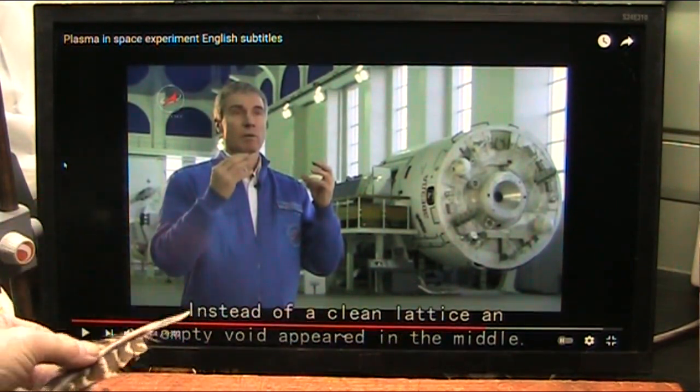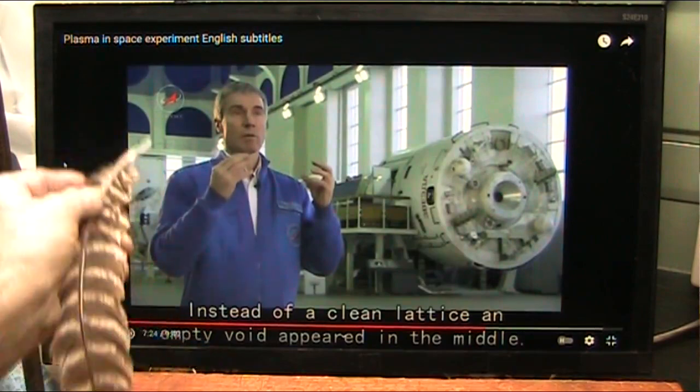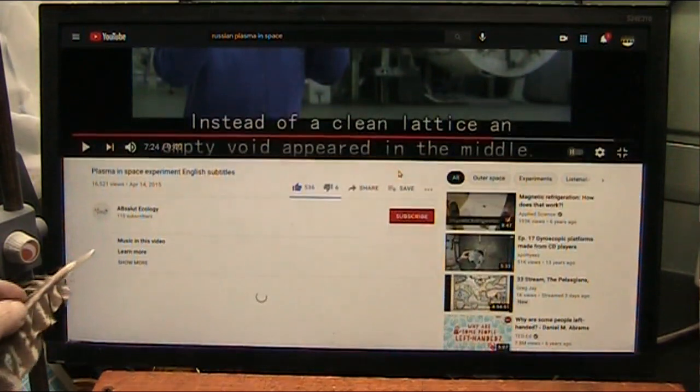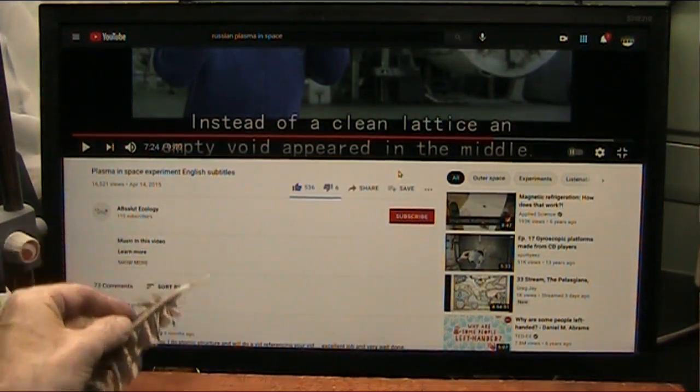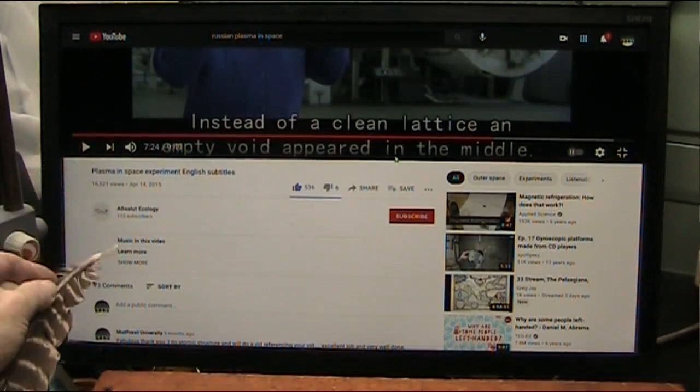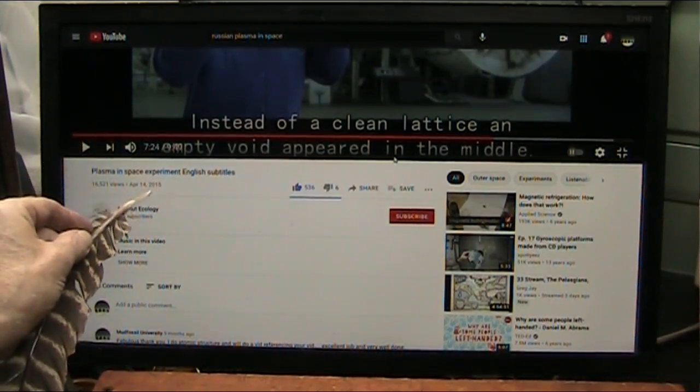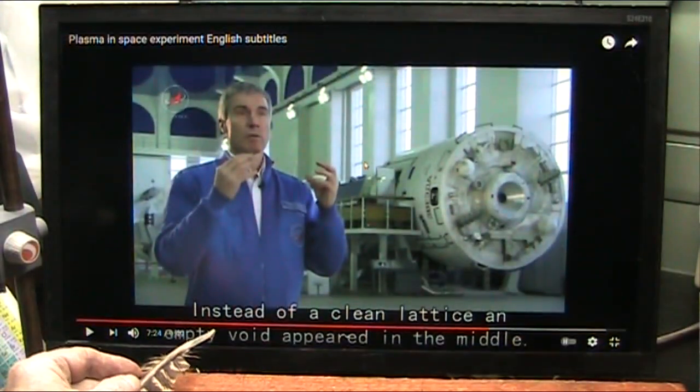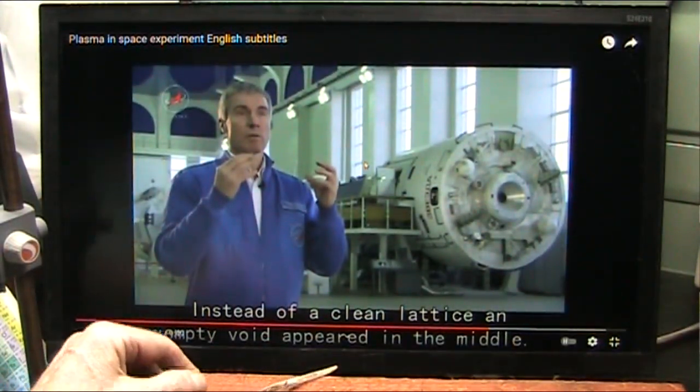I'm going to show you right now. What they did was they took plasma. This is called Plasma in Space Experiment, English subtitles, and it's Absolute Ecology that put this up back in 2015. It's only got 16,000 hits. And this is dark matter in space.